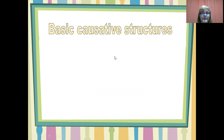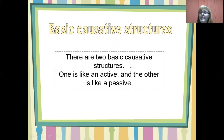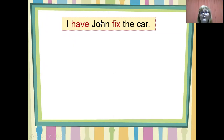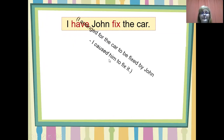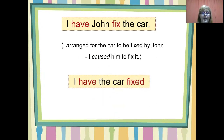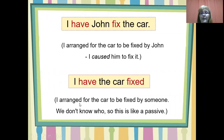Basic causative structures. There are two basic causative structures — one is like an active and the other is like a passive. These examples use the causative verb 'have.' I have John fix the car — I arranged for the car to be fixed by John, I caused him to fix it. I have the car fixed — I arranged for the car to be fixed by someone. We don't know who, so this is like a passive.